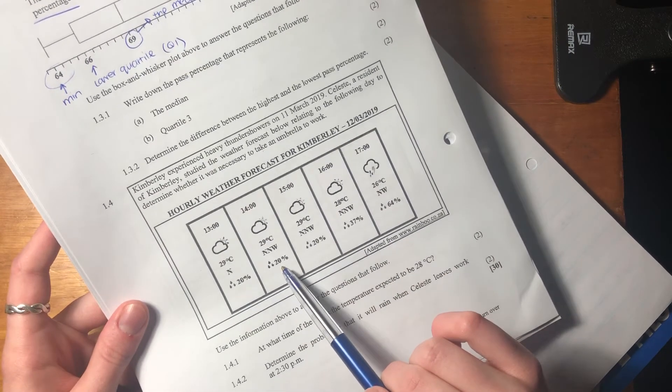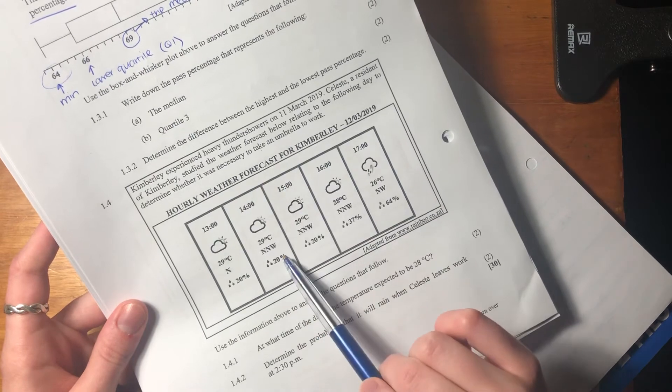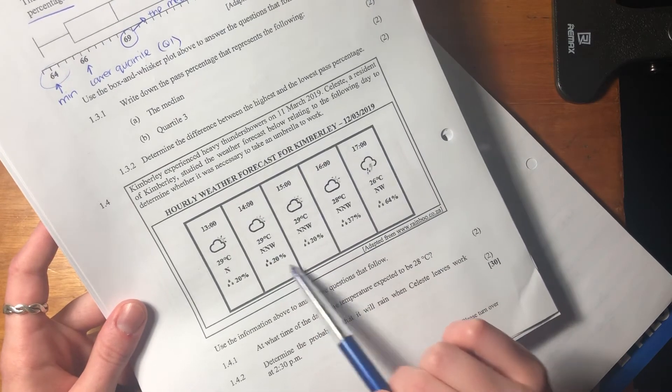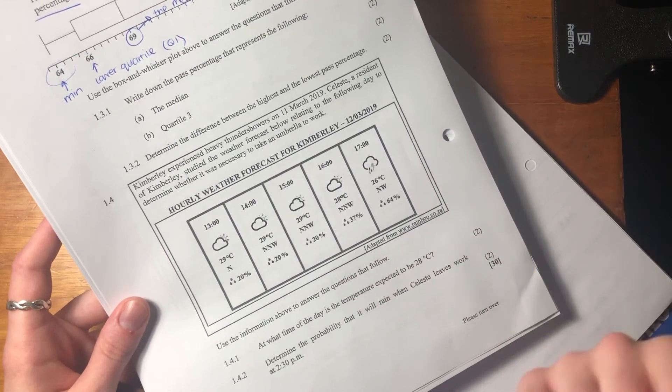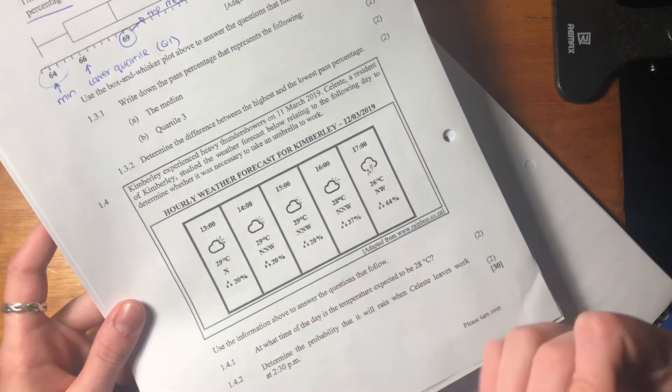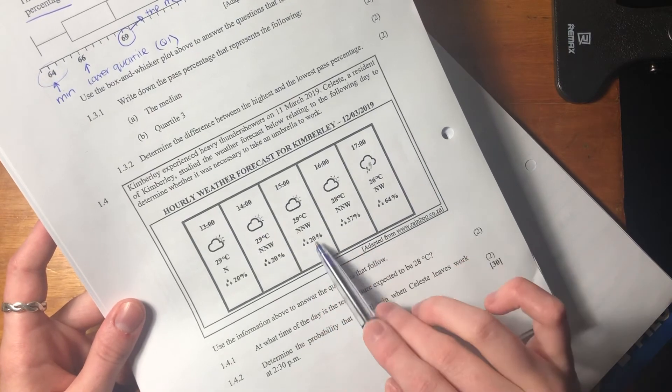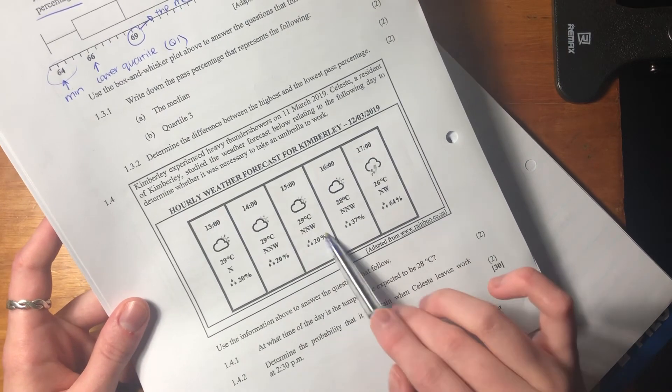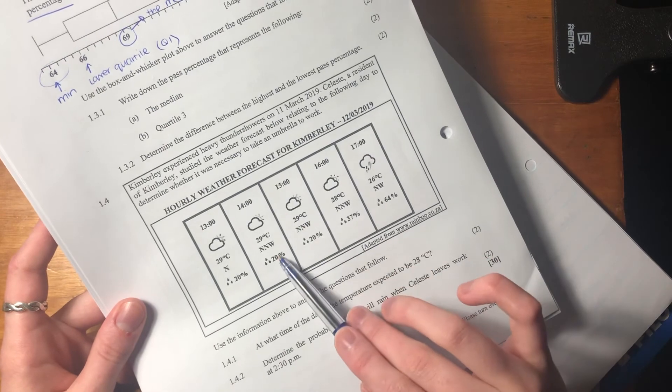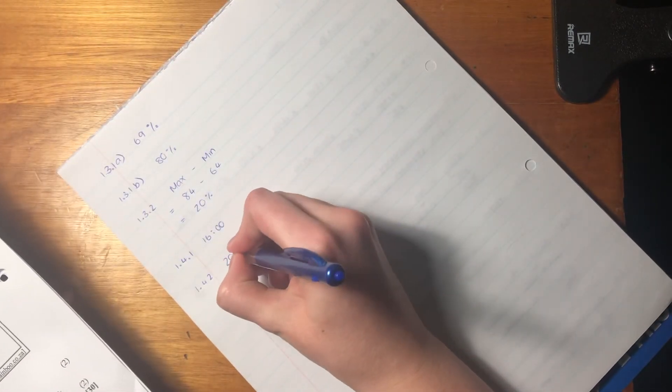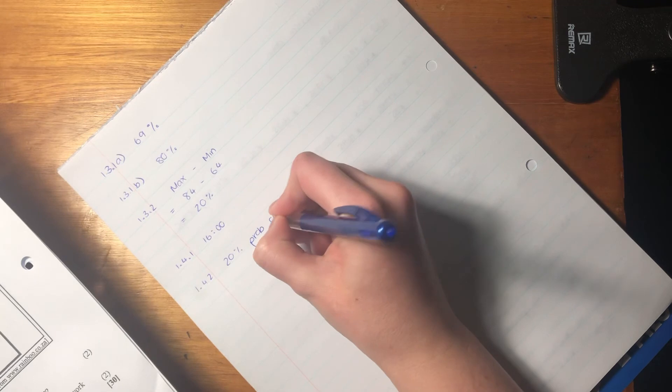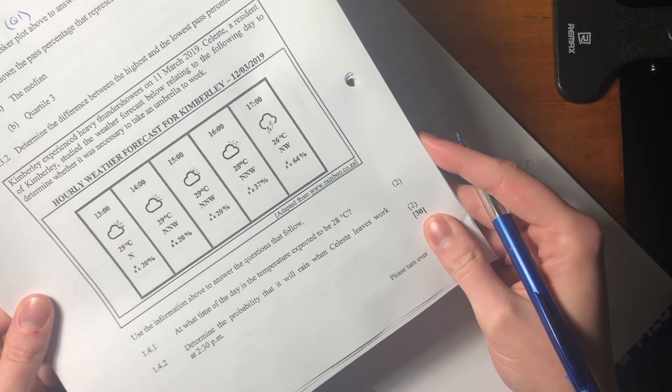But thankfully, the probability of it raining at two is 20%, and the probability of it raining at three is 20%. So it's a fair assumption, right? We're assuming, we are using the data we've given to make an assumption that between two and three, the probability of rain will remain the same as it is at both two and three. It will basically say 20% for the whole hour, right? So we're going to say 20% probability of rain. Okay, and that is us done.